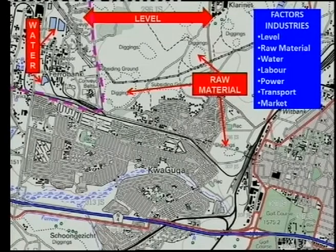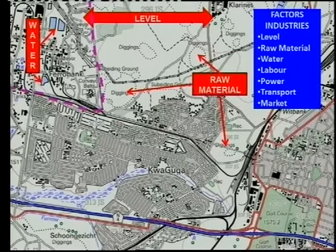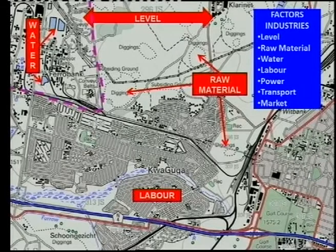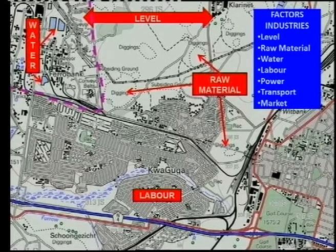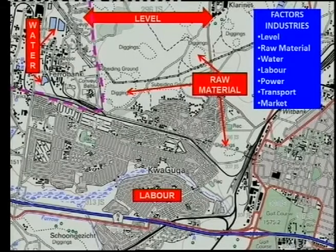Then water. We had a look at water also — there they've got water tanks there to supply water to the industries. What about labour? We've got a huge industrial area here, and remember that in your settlement, you also learn that your lower income areas are closer to your industries. So we've got our labour there.